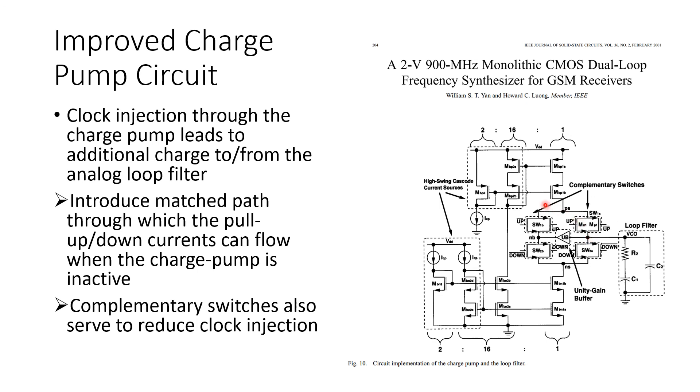The intention is that when the complementary switches here turn off, these ones will in turn turn on. So any charge injected by these transistors will be soaked up by these transistors and have minimal impact at the output of the loop filter. Likewise, you've got complementary switches in the pull-down path as well. All these techniques, of course, rely on good transistor matching.